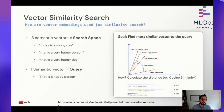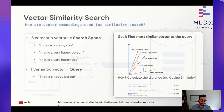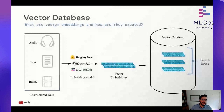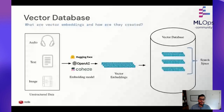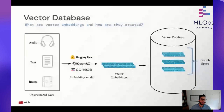That is a major advantage of these models: the ability to capture semantic representation. The search space we were talking about can be represented inside a vector database. That's where vector databases come in — you have all of these embeddings created from various APIs or models, and you put them into a vector database, which also provides the ability for a secondary index.